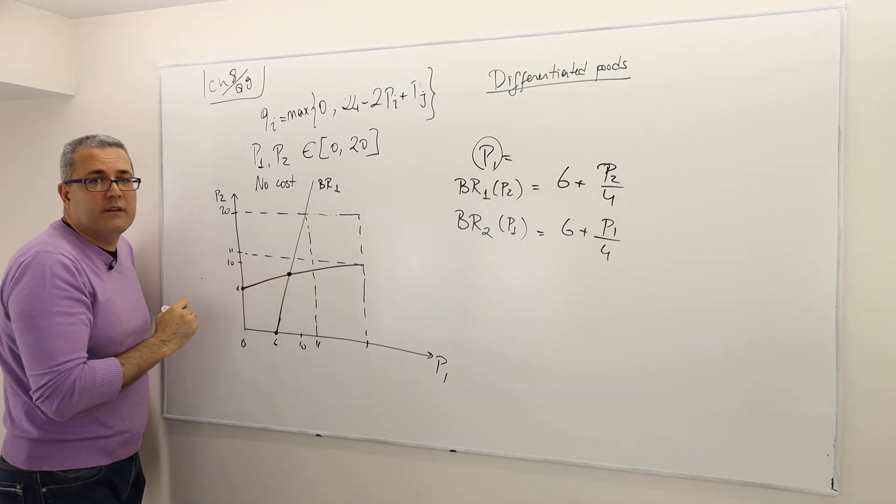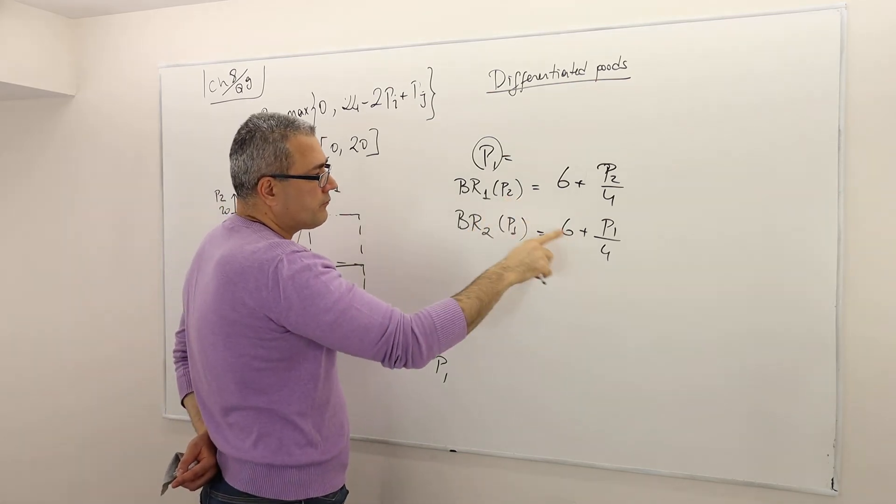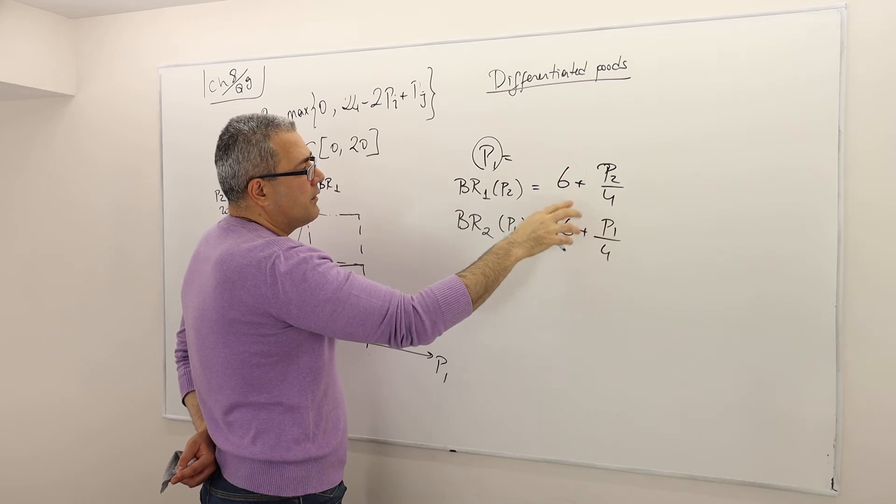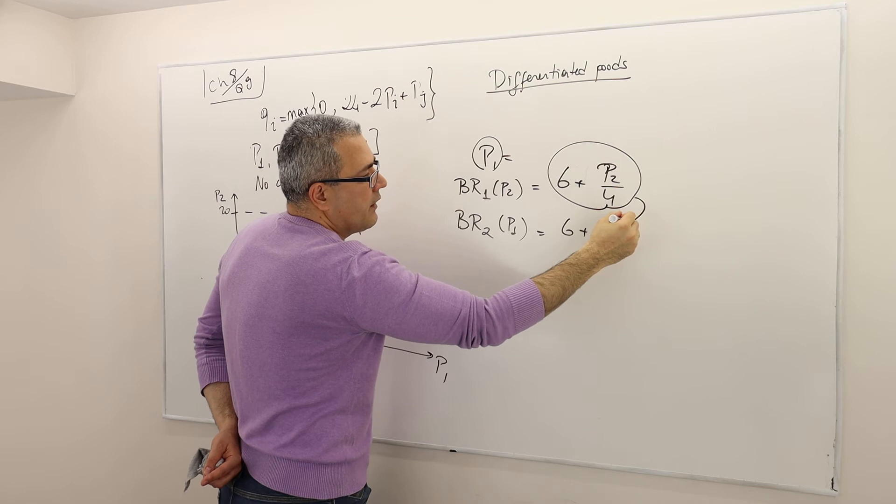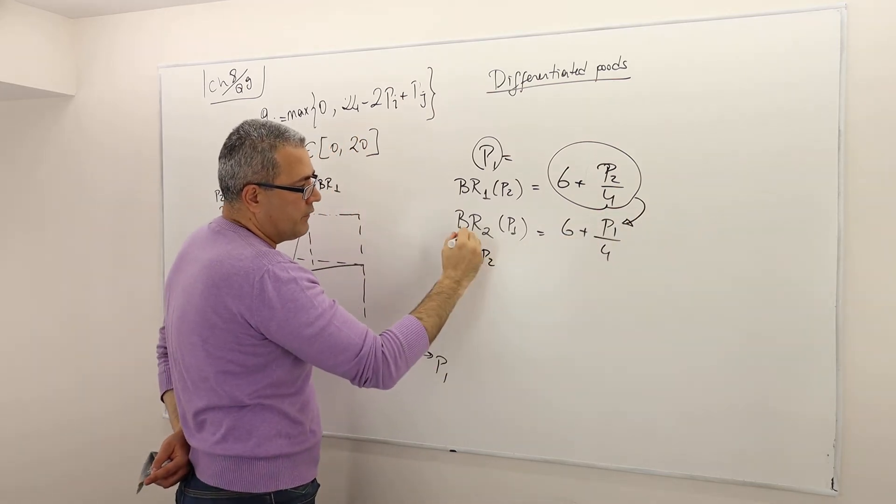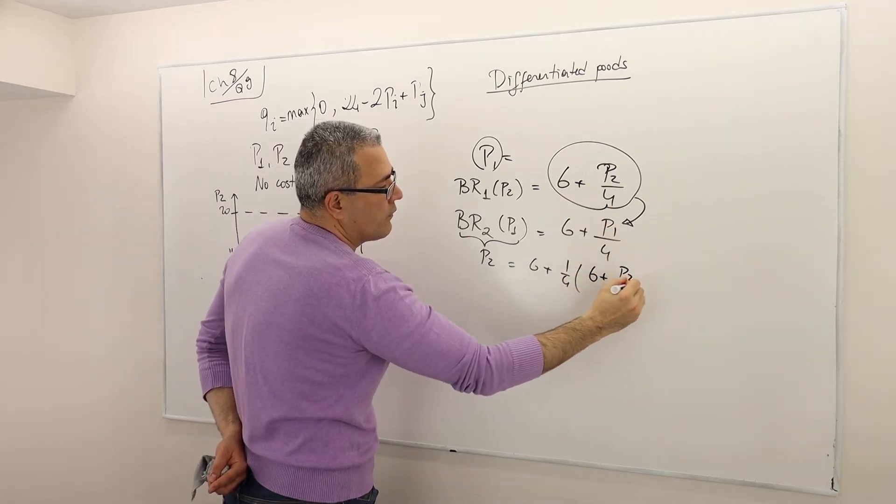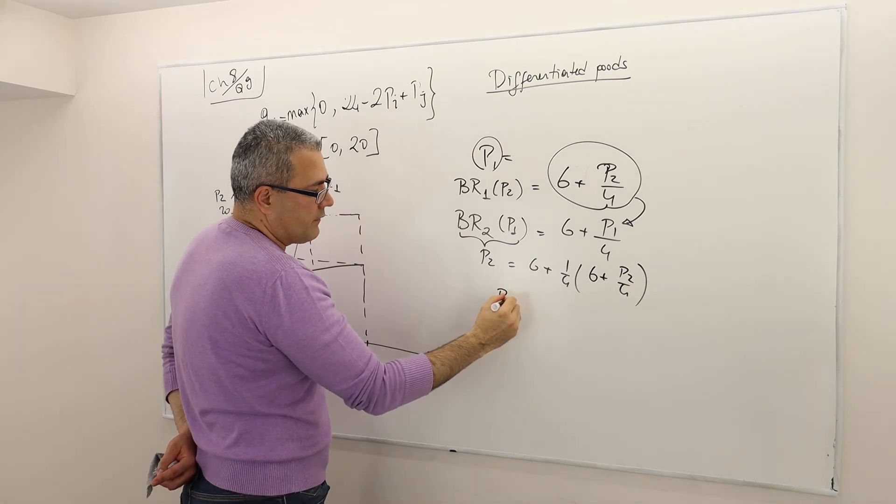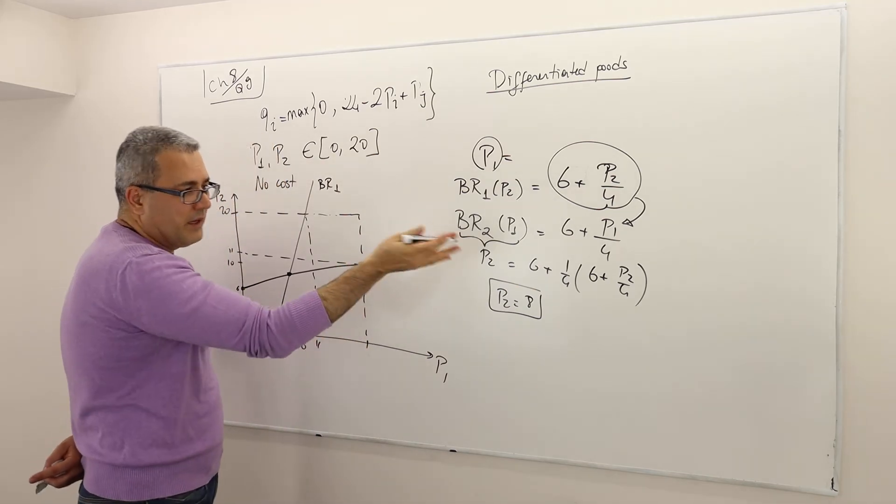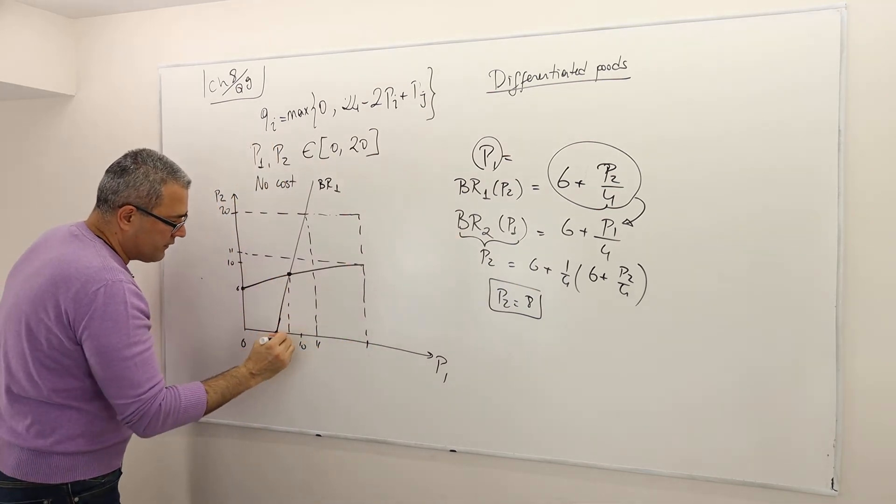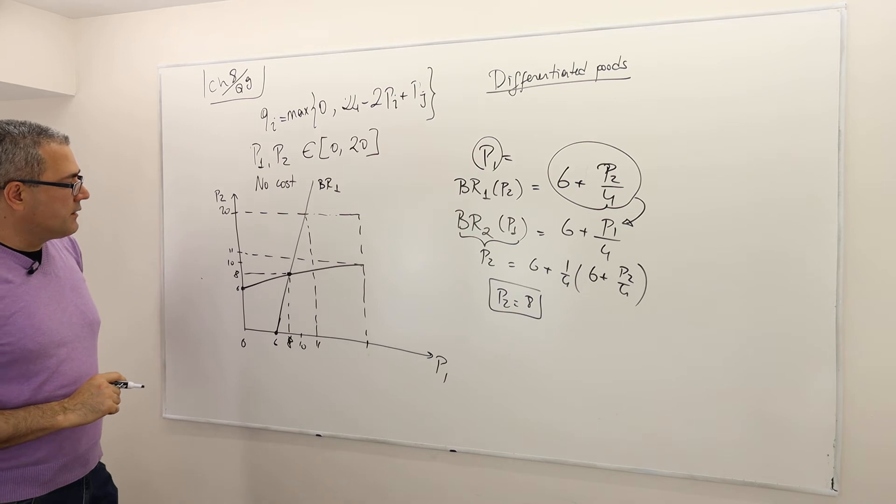How do I find this intersection? Simple. Whenever you see p1 here, just plug this because remember, this is p1. So put this thing into p1. And so this is, remember, p2 equals 6 plus 1 over 4 p1, which is 6 plus p2 over 4. And so if you solve this, I'm skipping this step, you're going to see that p2 is equal to 8. And symmetrically, p1 is going to be 8. So this is 8, and this is also 8. So that's it. So these are the best responses.